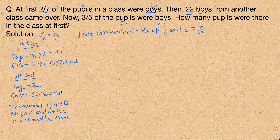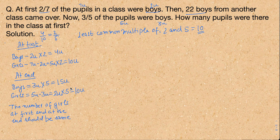Now for the end scenario, girls were two units — multiply by five to get ten units. Also multiply the boys' units by five: three units times five gives fifteen units. Fifteen-tenths simplifies back to three-fifths, which matches the original fraction, so this is correct.